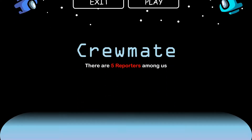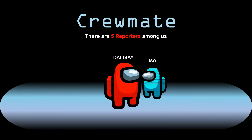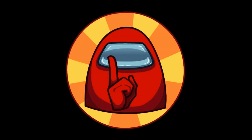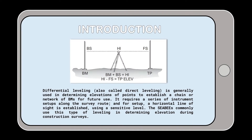Differential leveling, also known as spirit leveling, is generally used in determining elevations of points to establish a chain or network of benchmarks for future use. It requires a series of instrument setups along the survey route, where a horizontal line of sight is established using a sensitive level. The SEABEES, or the Navy Construction Battalion, commonly use this type of leveling in determining elevation during construction surveys.